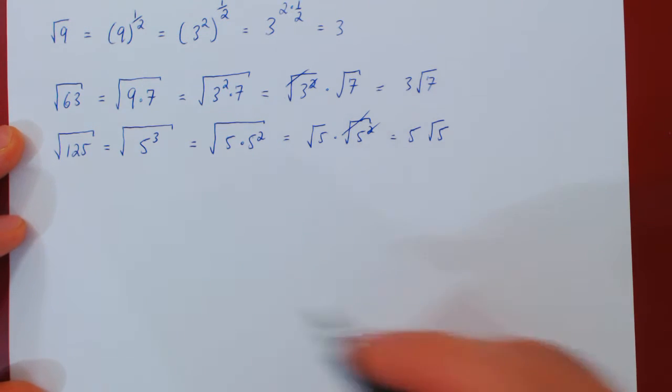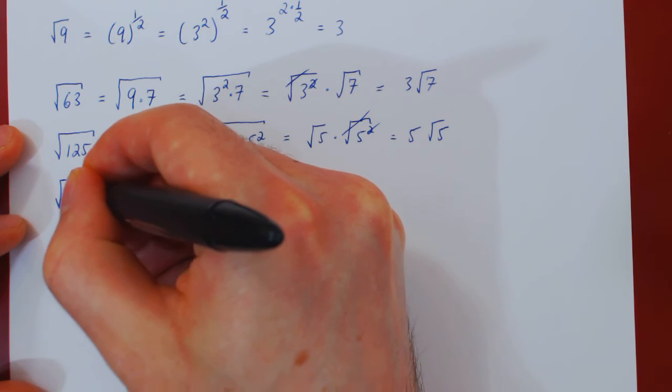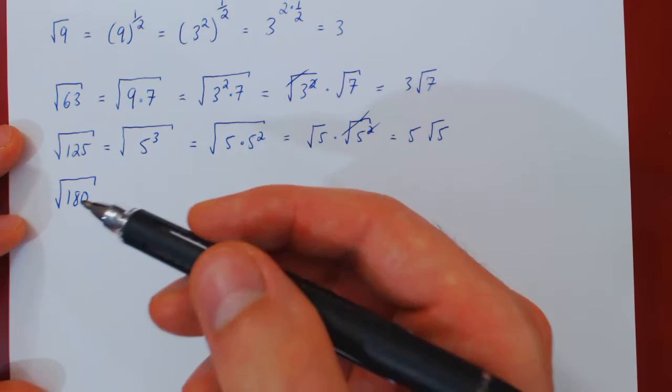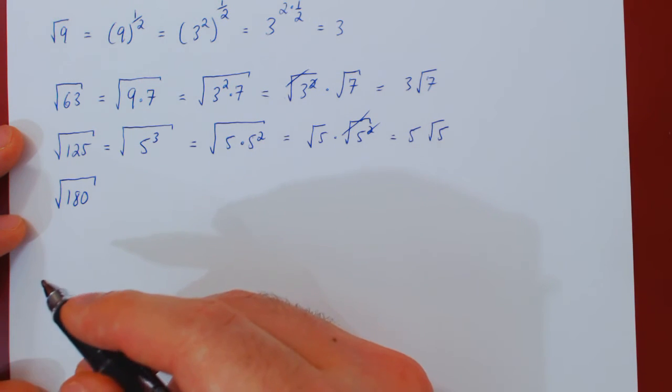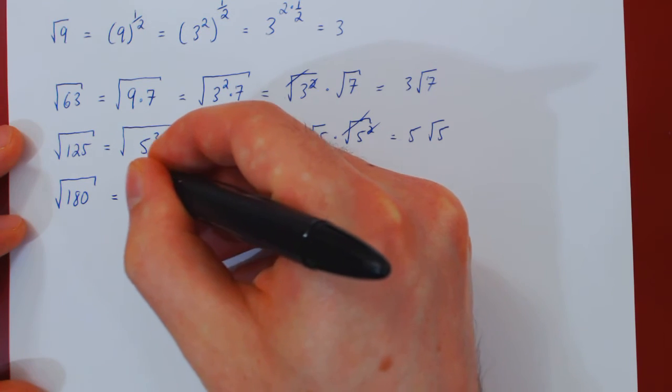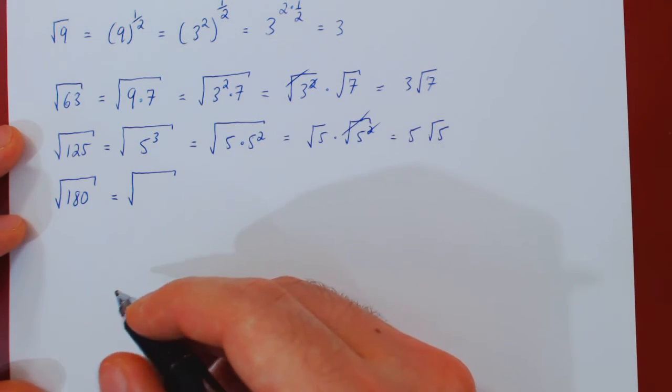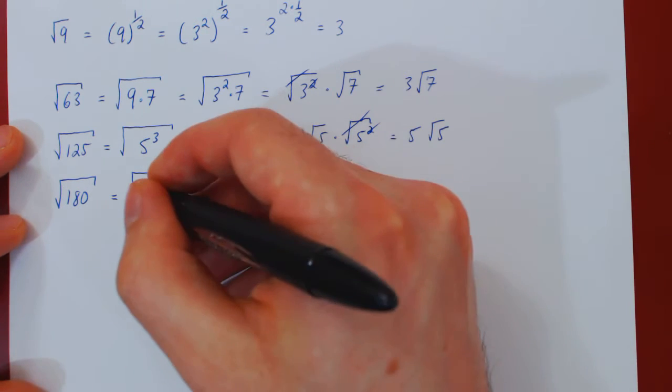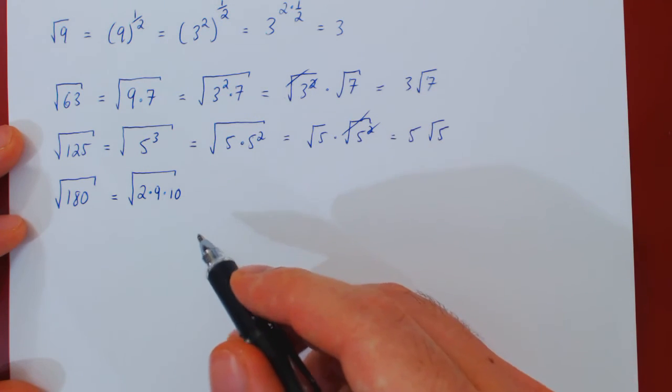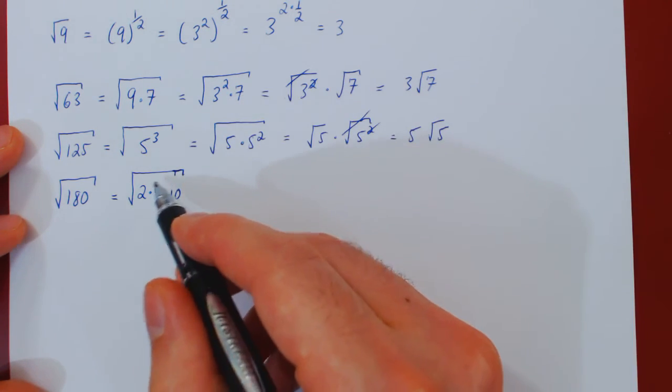Let's do one last example. What about the root of 180? We're going to try and factor 180 so as to obtain some factors as perfect squares. An obvious factorization is 180 is 18 times 10, but 18 is 2 times 9, so we obviously have 2 times 9 times 10.